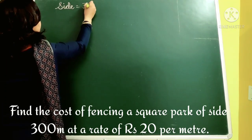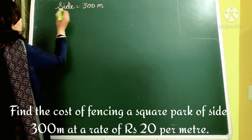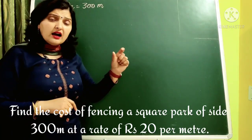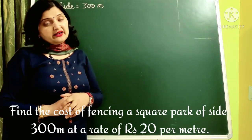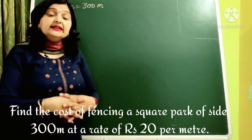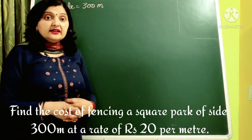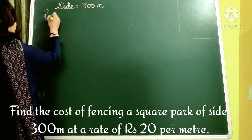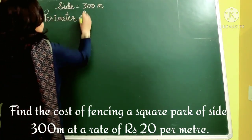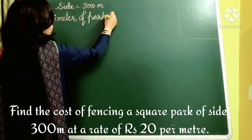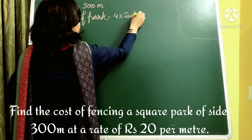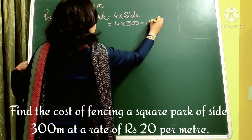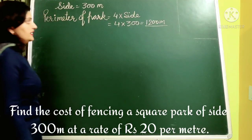The side of the park is 300 meters. Perimeter of the square park = 4 times side = 4 into 300 = 1200 meters. So the perimeter of the park is 1200 meters, which is the total length that needs to be fenced.